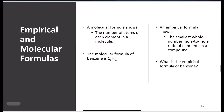I care about percent composition because of empirical and molecular formulas. A molecular formula shows the actual number of atoms of each element in a molecule — it's the complete formula. For example, C6H12O6 is glucose, with six carbons, twelve hydrogens, and six oxygens. An empirical formula, on the other hand, is the smallest whole number multiple ratio of elements in a compound — key words: smallest, whole number, multiple ratio.